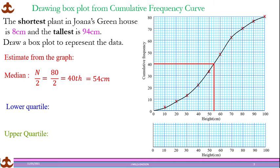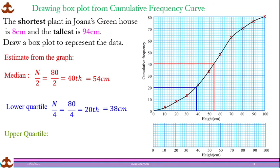The lower quartile is the first quarter. Divide 80 by 4, which gives you the 20th position. Go to the graph, draw the 20th line across to hit the graph, bring it down, and read the number. That gives us 38 cm for the lower quartile.